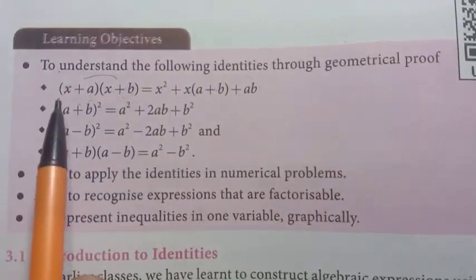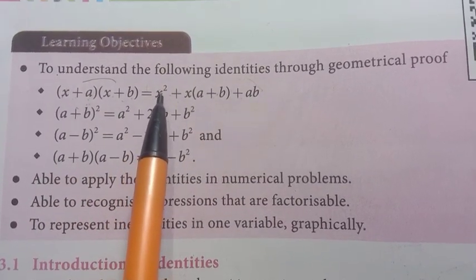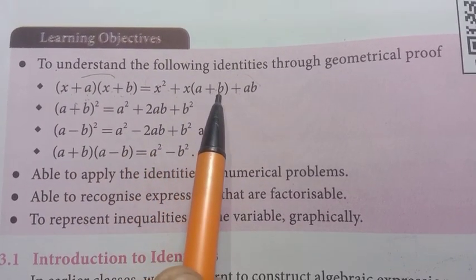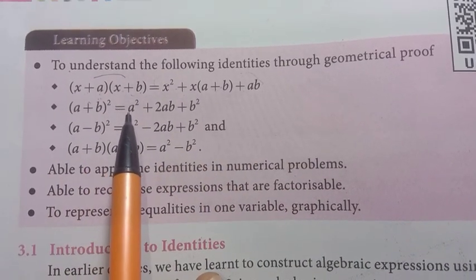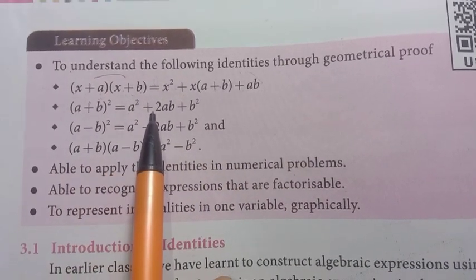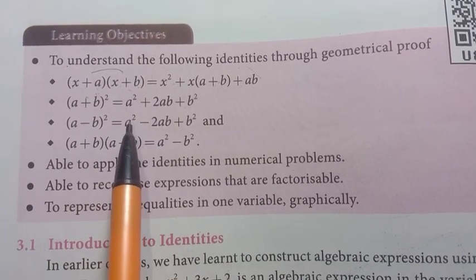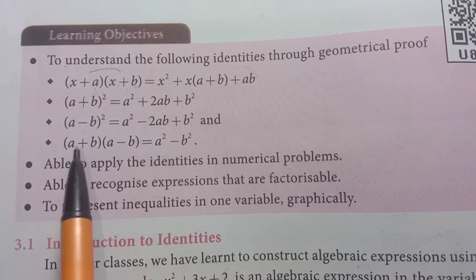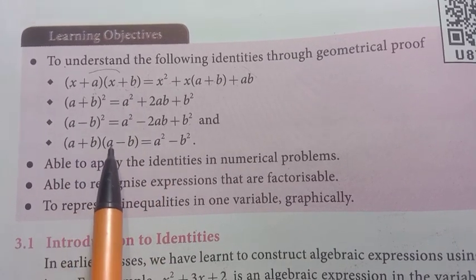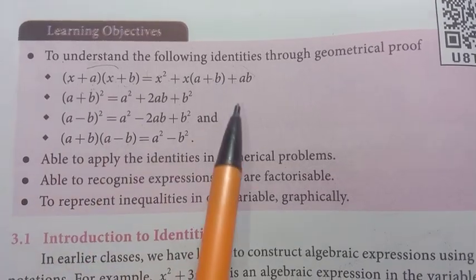Let's memorize the four identities. First: x plus a into x plus b equals x squared plus x into a plus b, plus ab. Second: a plus b the whole square equals a squared plus 2ab plus b squared. Third: a minus b the whole square equals a squared minus 2ab plus b squared. Fourth: a plus b into a minus b equals a squared minus b squared.